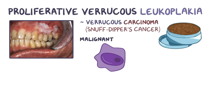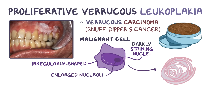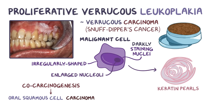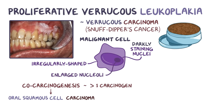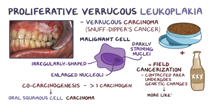Generally speaking, malignant cells are irregularly shaped with darkly staining nuclei, enlarged nucleoli, and produce abnormal keratin that looks like pearls, so they're called keratin pearls. Cocarcinogenesis is necessary to cause oral squamous cell carcinoma, meaning that more than one carcinogen or causative factor is needed to cause the disease, like abusing alcohol and using tobacco. Many carcinogens come into contact with a wide area within the oral cavity and oropharynx, causing field cancerization — the entire contacted area or field undergoes genetic changes and is more likely to develop cancer in the future.